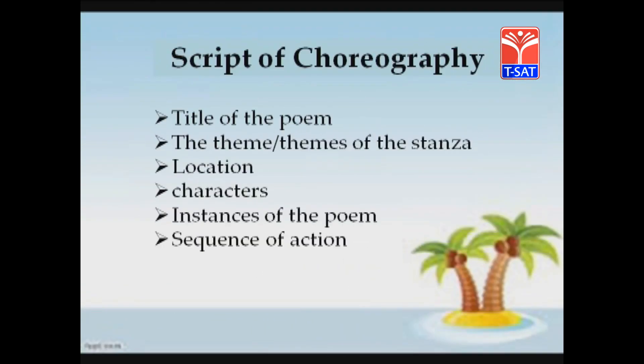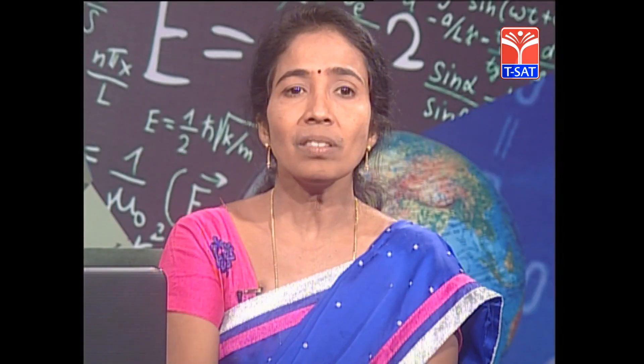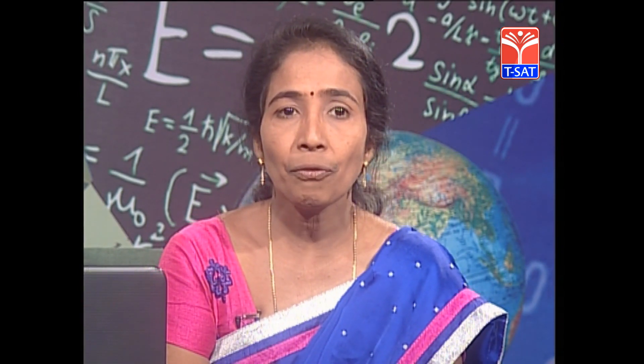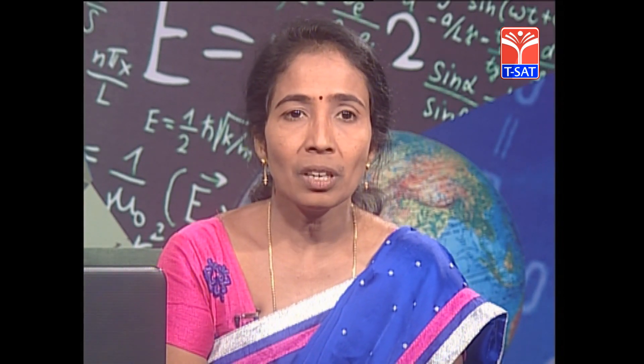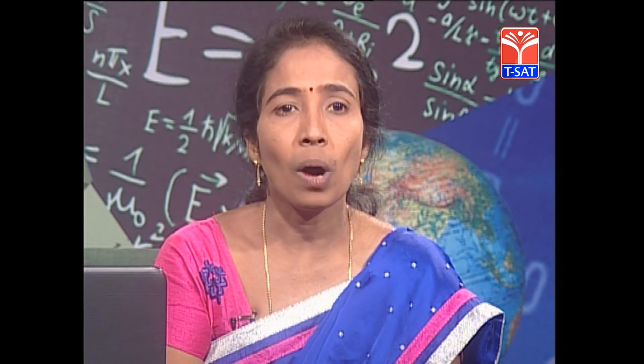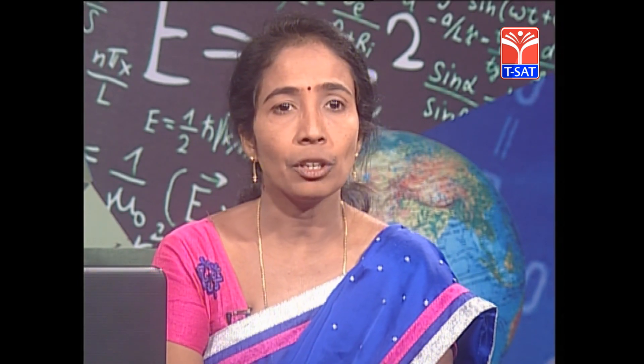Here is the format — the steps to be taken for a script of choreography. First: title of the poem. Then: theme or themes of the stanza. Then: location, characters, instances of the poem, and the final sequence of action. These are the six steps to be answered to prepare a perfect script of choreography. Let us see the choreography of the first three stanzas of the poem 'Once Upon a Time' as an example.